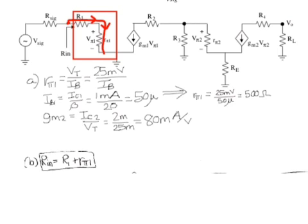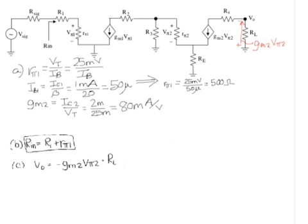To find the overall gain, Vout over Vsig, an equation for Vout is needed. Vout is minus GM2, Vpi2, which is shown by the red arrow, times RL.